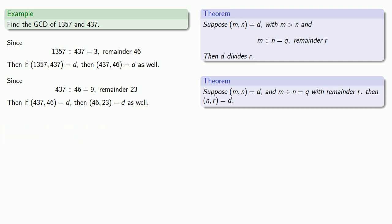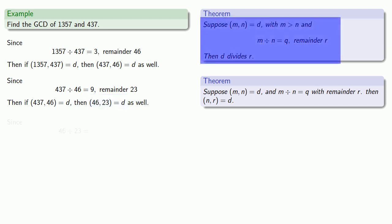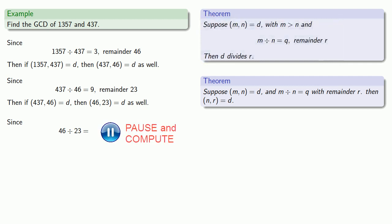So how do you find the greatest common divisor of 46 and 23? We'll divide the larger number by the smaller, and there's no remainder, which means that 46 is actually divisible by 23. And so the greatest common divisor of 46 and 23 is 23.